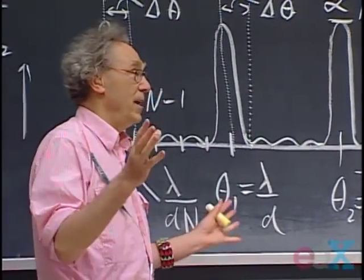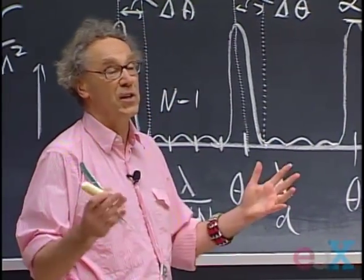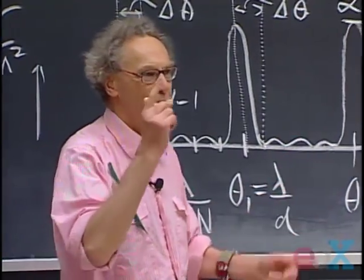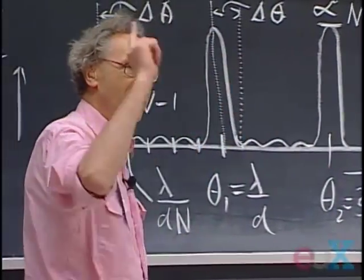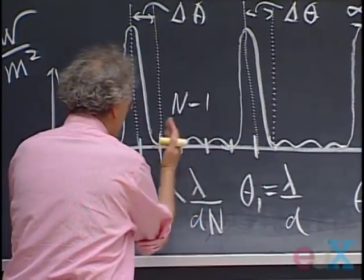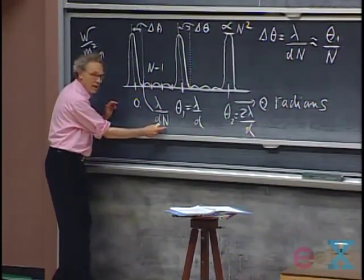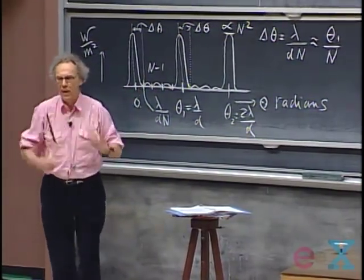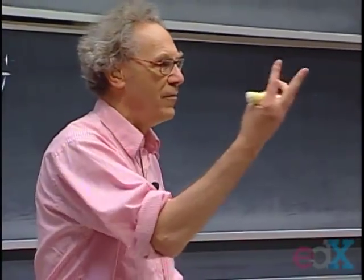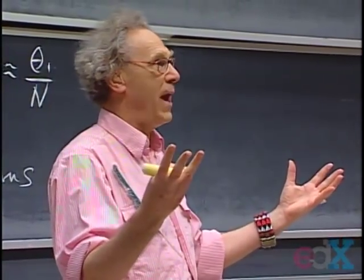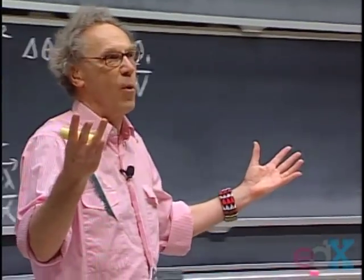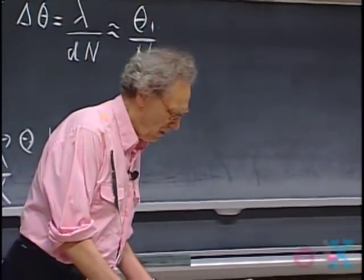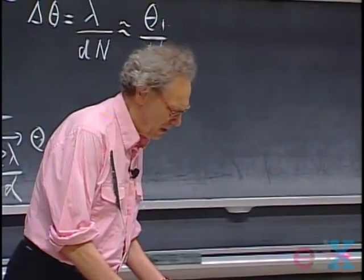You may say that's a violation of conservation of energy — three times more sources, nine times more light. But you overlook that if you make N go up by a factor of three, the lines get narrower by a factor of three. So they get higher by a factor of nine, narrower by a factor of three — giving a net factor of three more light. Of course: three times more sources gives three times more light. No violation of conservation of energy.